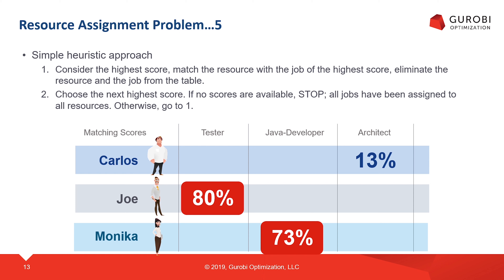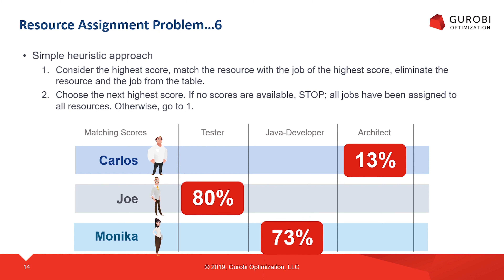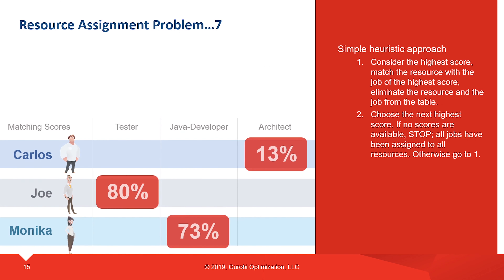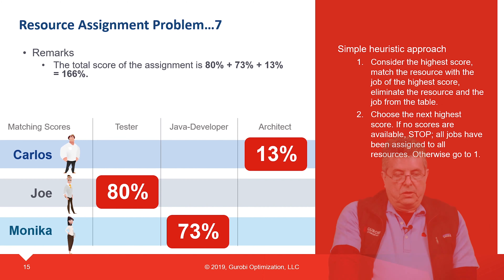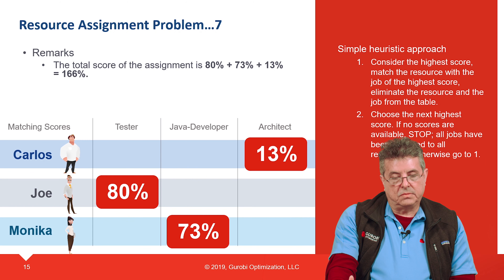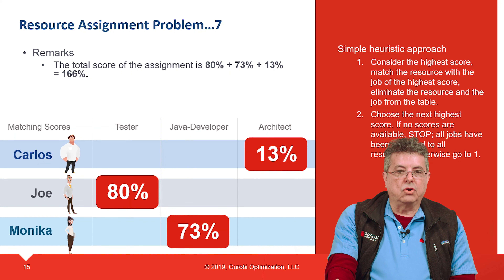Now the next highest matching score is Monica doing the Java developer job, so let's assign the Java developer job to Monica, and again remove the jobs Monica won't be able to do and the resources that cannot do the Java job. Now the only possible option remaining is to assign Carlos to the architect job, so let's do that.